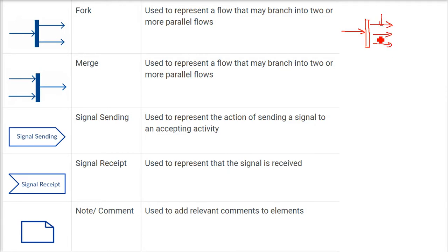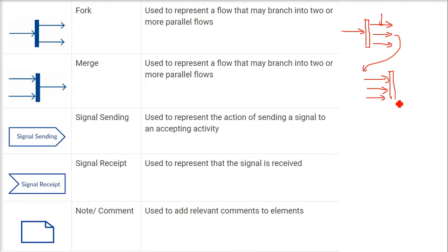The fork shows activities running simultaneously or in parallel. The fork is always combined with a merge, because those multiple parallel flows eventually need to combine. The join/merge symbol here is used to represent flows that branch into two or more parallel flows and are then merged back to form a single flow.